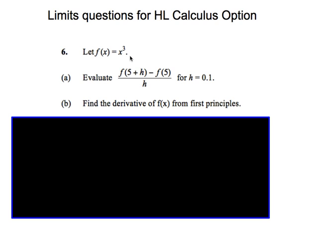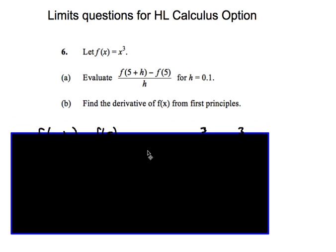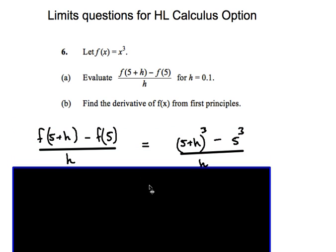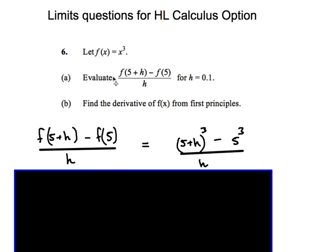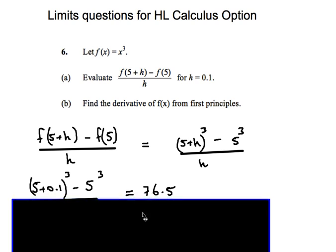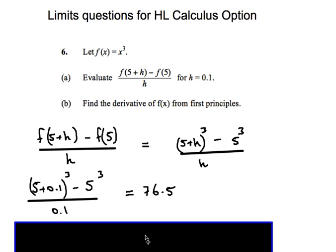Here's a question: let f of x equal x cubed. We've got to evaluate this function for h equals 0.1. If we remember in terms of using our functions, we can substitute our values in. So f of 5 plus h means we put 5 plus h instead of x, giving us 5 plus h all cubed, minus 5 cubed, all over h. Evaluating this for h equals 0.1 gives us 76.5.